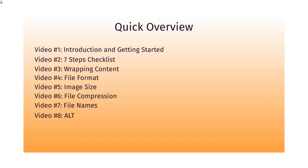Video number eight will talk about alt tags, which appear in the source code of your website and tell Google what your image is all about. A lot of times most people simply focus on the alt tag, but as you can see it's much more than that. Once you've learned all of these steps, we can talk about how to automate the process. I don't want you to skip to video number nine straight away, because if you don't understand videos one through eight you'll miss the point, and if things change you won't be as successful.